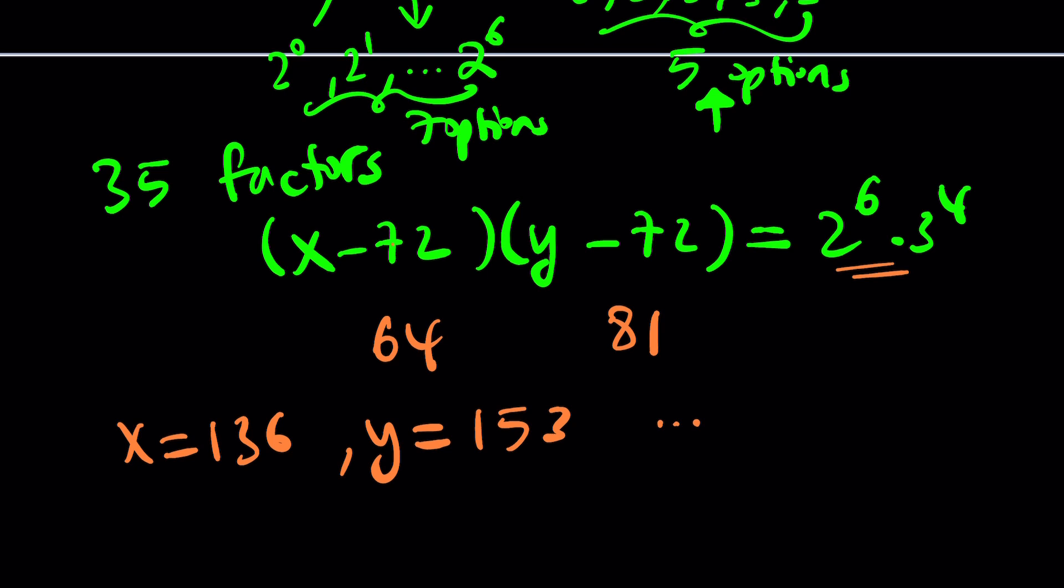But there are so many other ones because of the way we can factor. There's so many different ways you're going to find a lot of things. But here's the thing. Once you pick one factor, you automatically have to pick the other one for the other number.